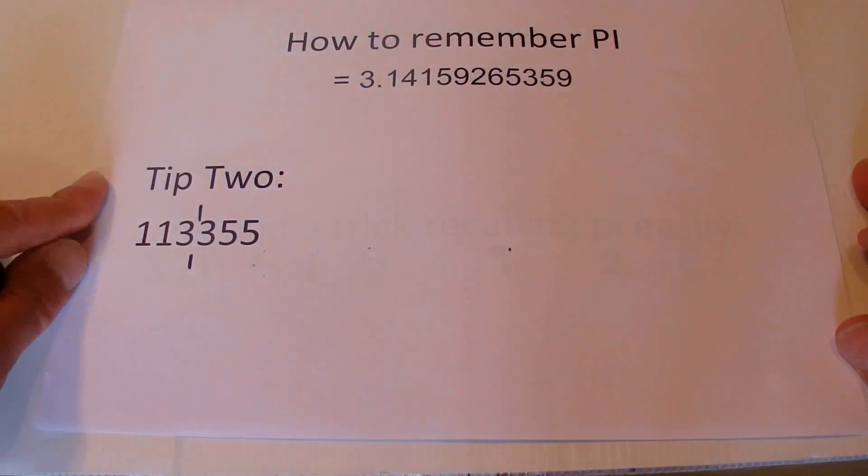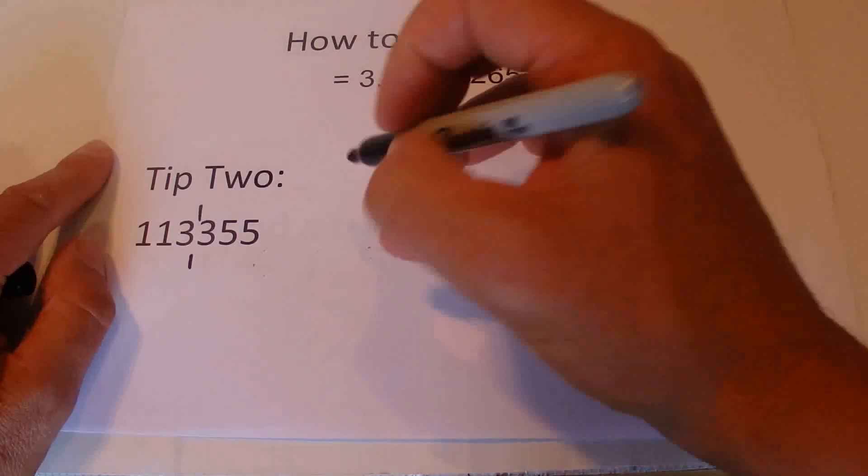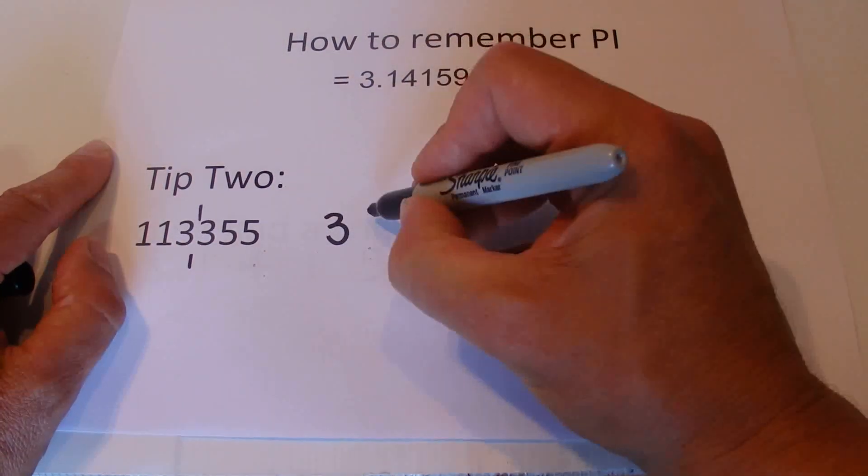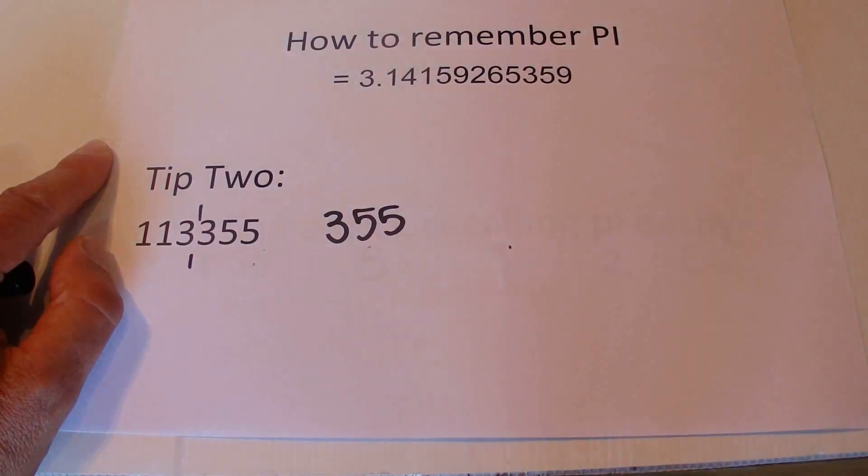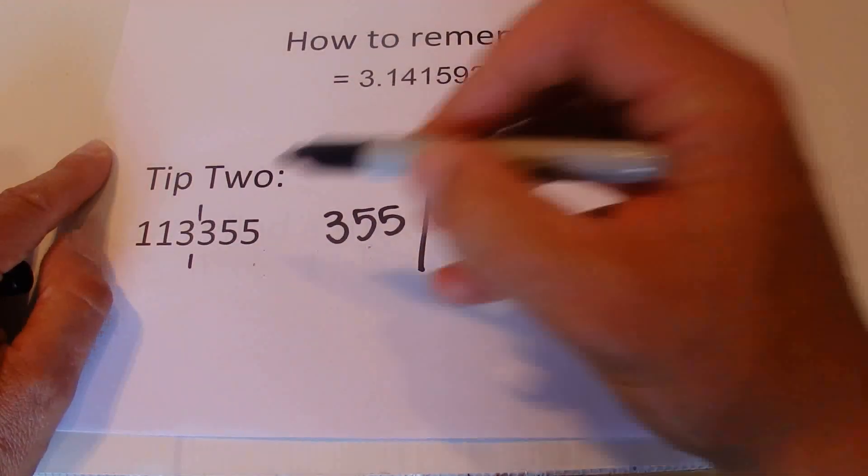You take the last three numbers first and put 355, and then you divide that by the 113.